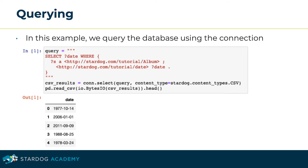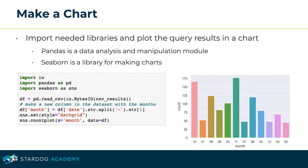We can also query Stardog using PyStardog. In this example, we're querying the database using the connection's select method. We pass in the query and then the content type — we want to receive back CSV formatted results. Once we get the results back, we can use a method to read the CSV file and display a few rows. We can also make a chart by importing the needed libraries and plotting the query results. In this example, we're using Pandas for data analysis and Seaborn for making charts. We read in a CSV, parse the date to get month numbers, set a style, and then plot our data on the chart.